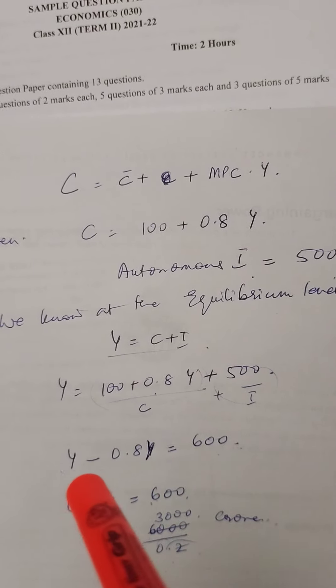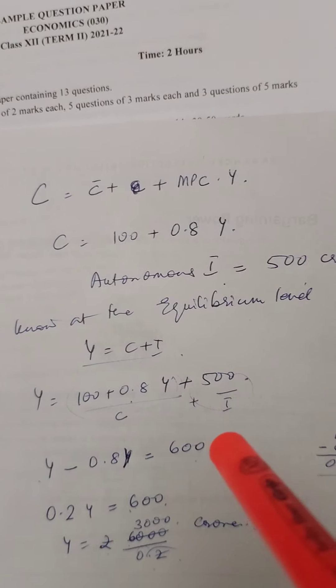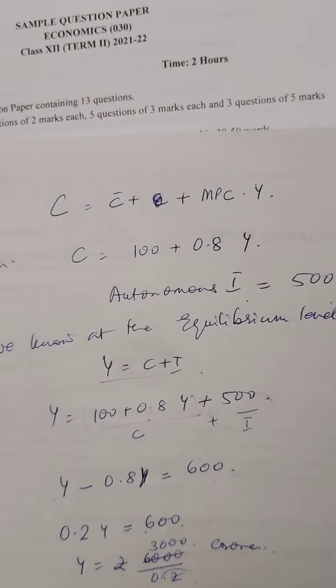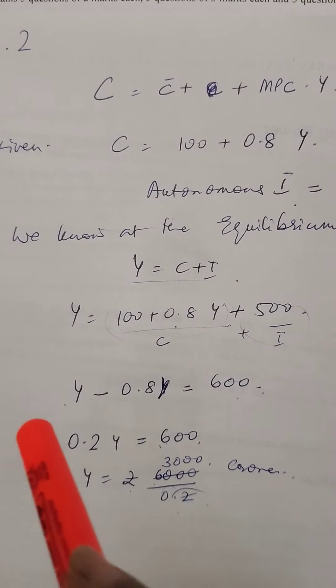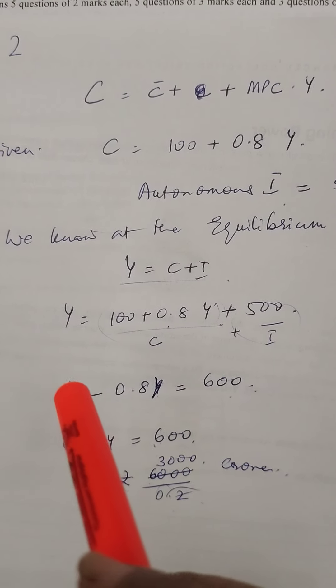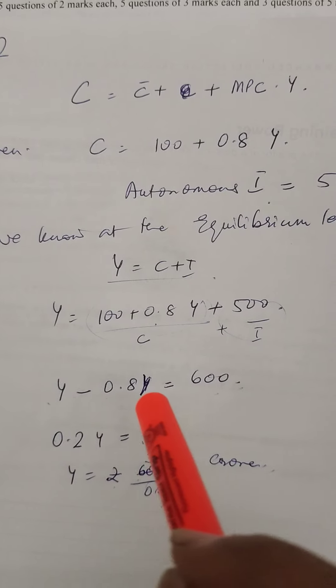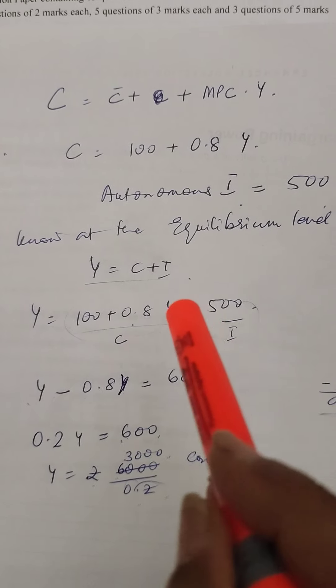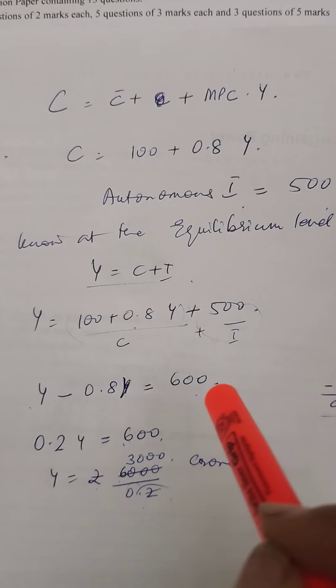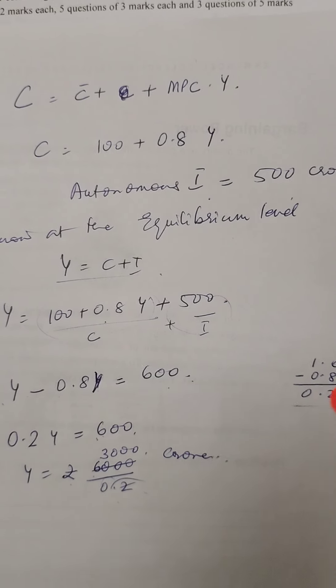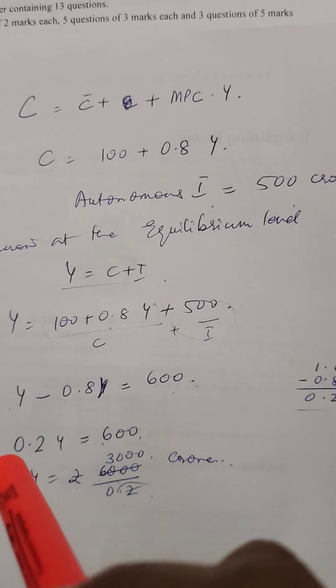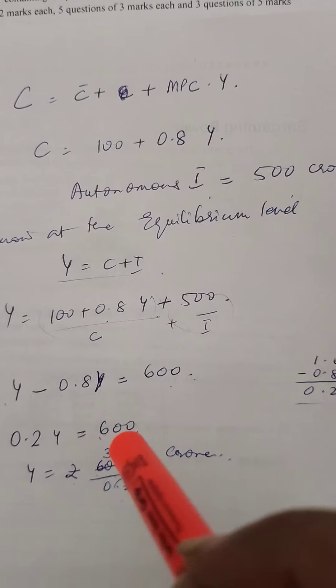Then you just solve it. Write it in equation form. Y - 0.8Y = 600. 1Y minus 0.8Y gives 0.2Y = 600.